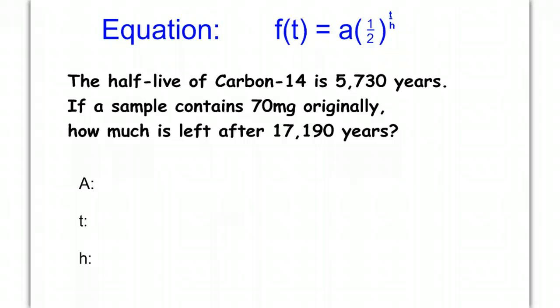So again, we need our values. Our a, our initial value, is 70 mg, t time is 17,190 years, and the half-life is 5,730 years.